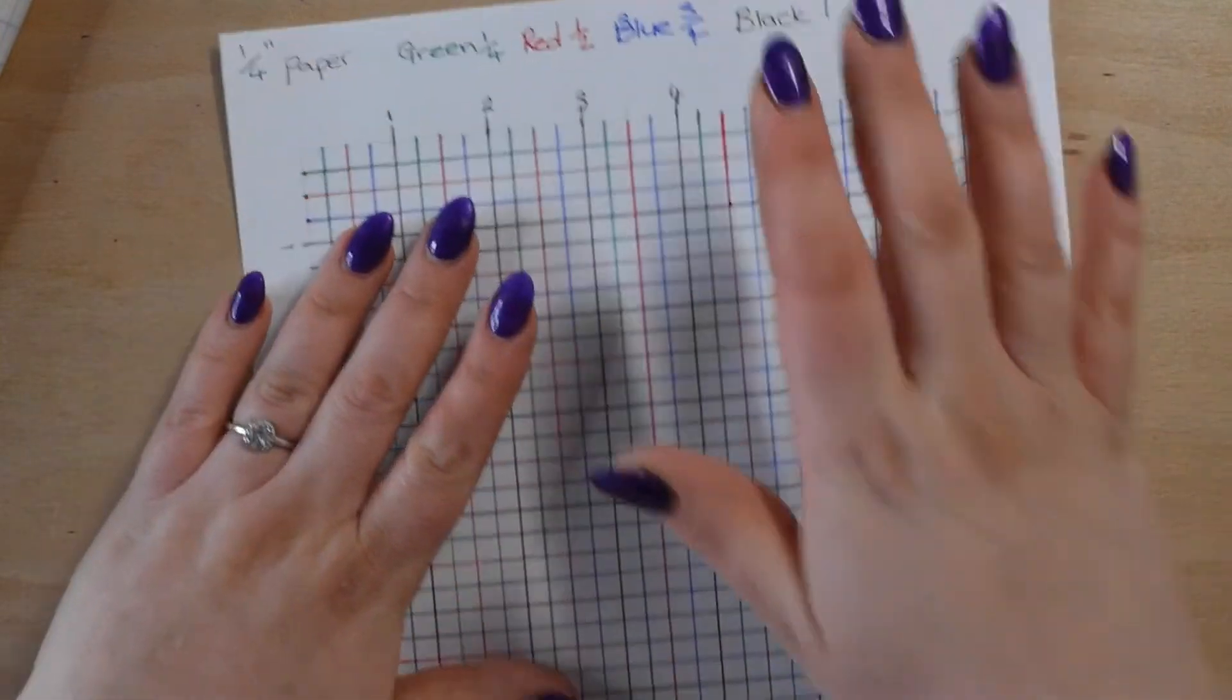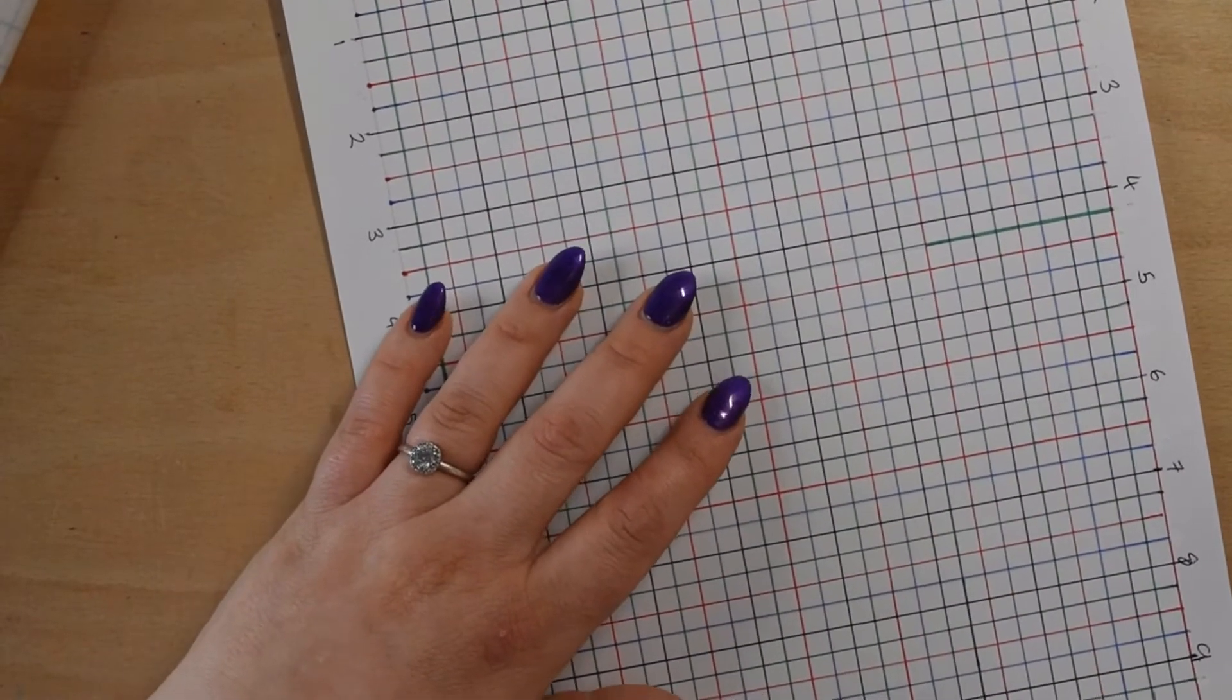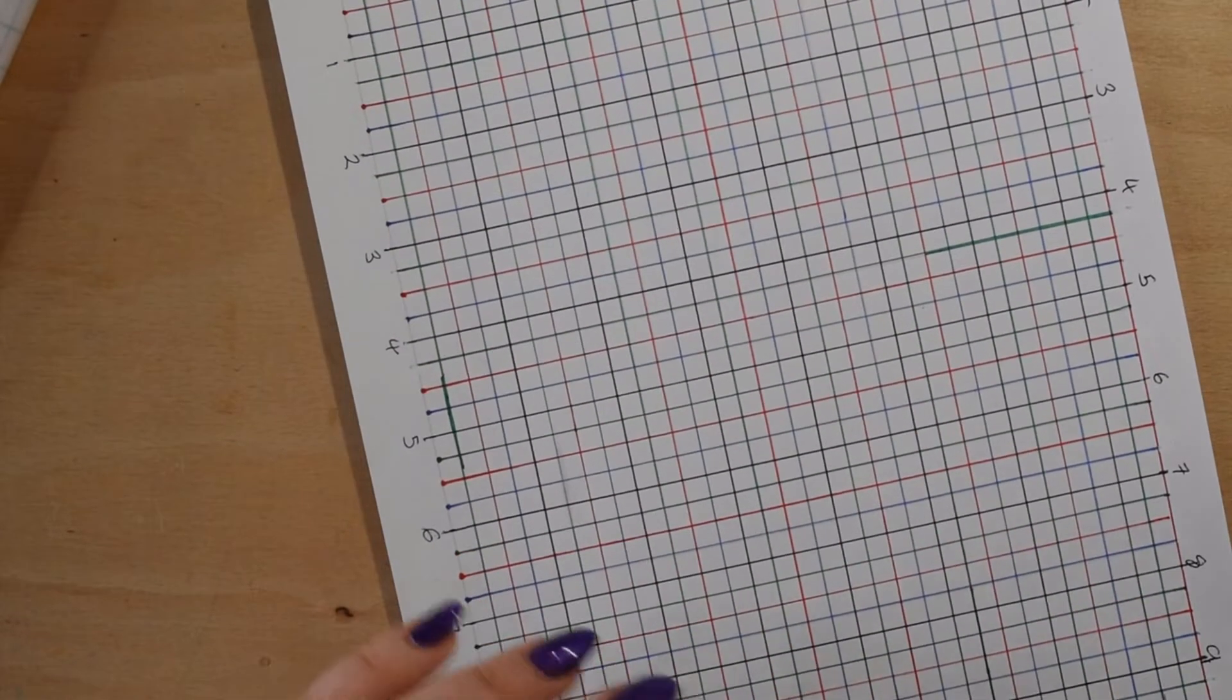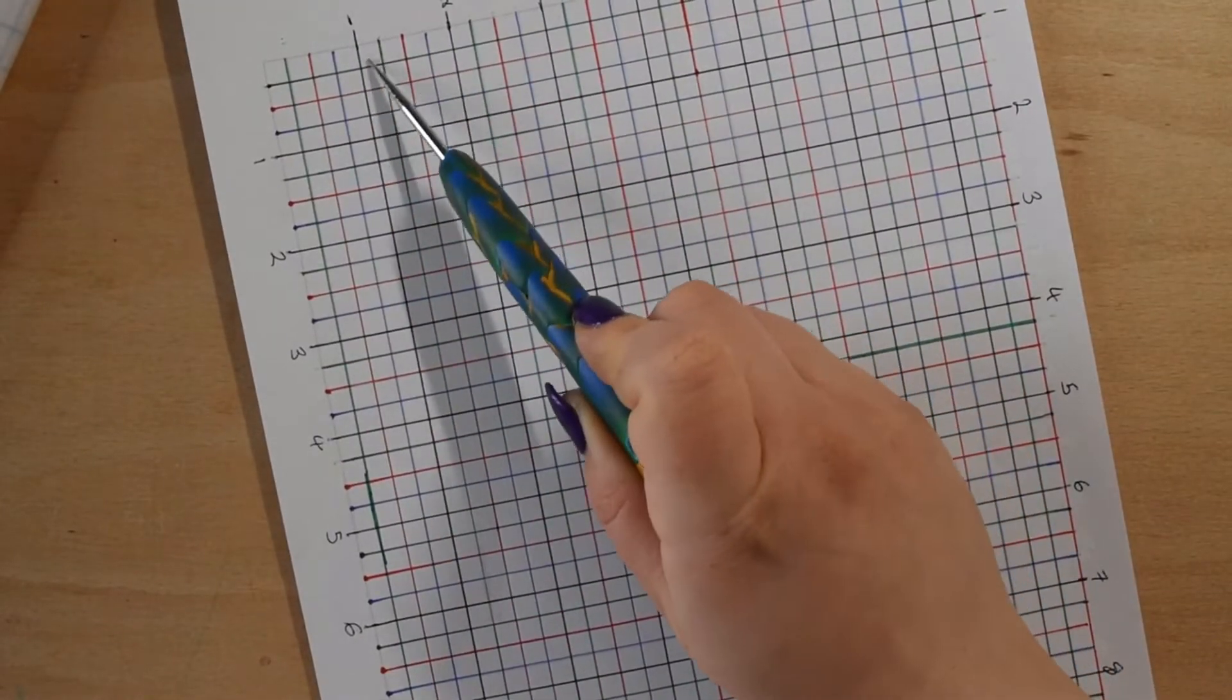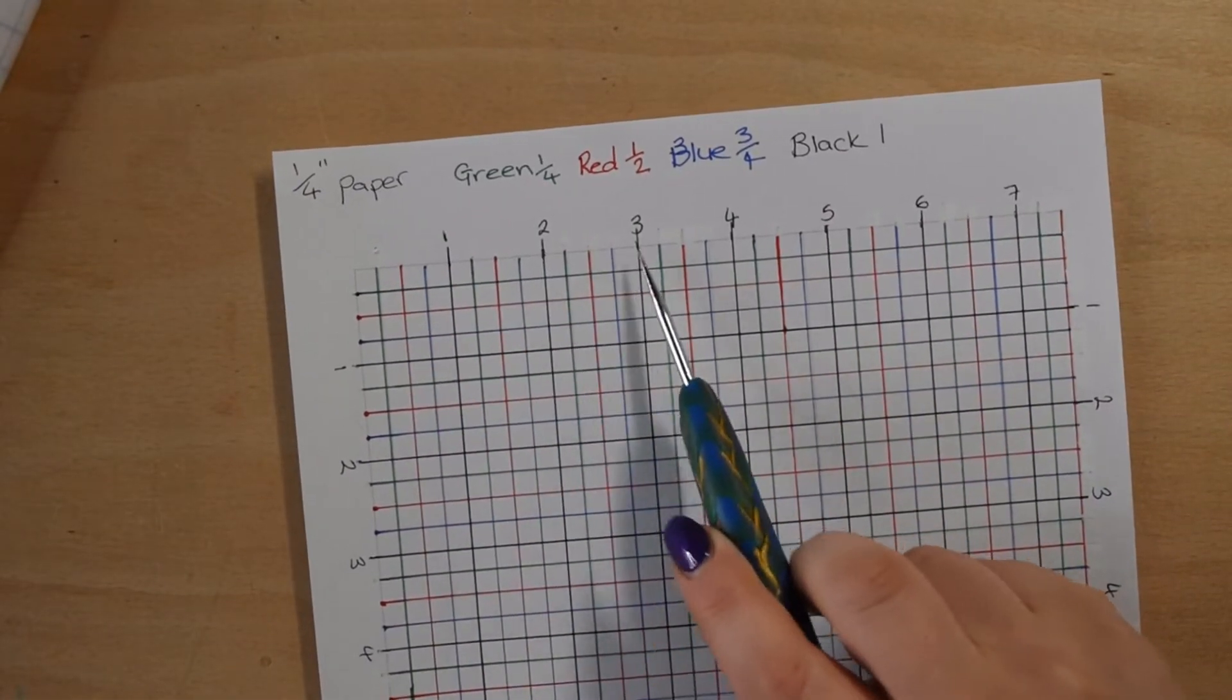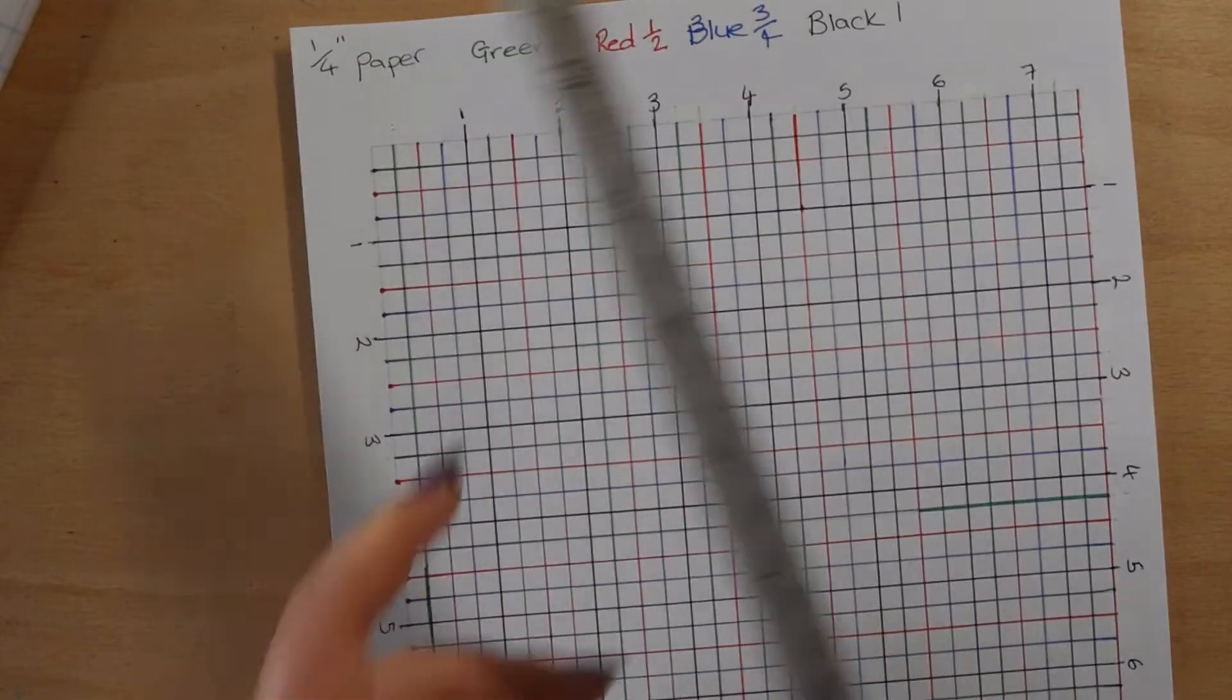What I did first was I marked out one inch every four spaces and I just put a little black mark on each of those at the top and the bottom and then side to side. Then I just took my ruler.